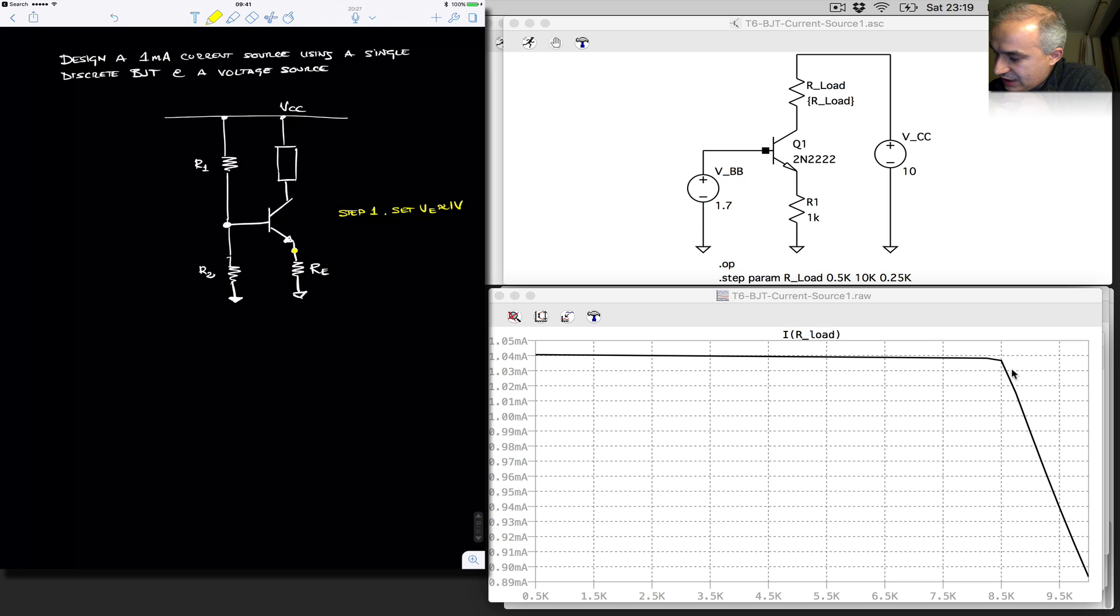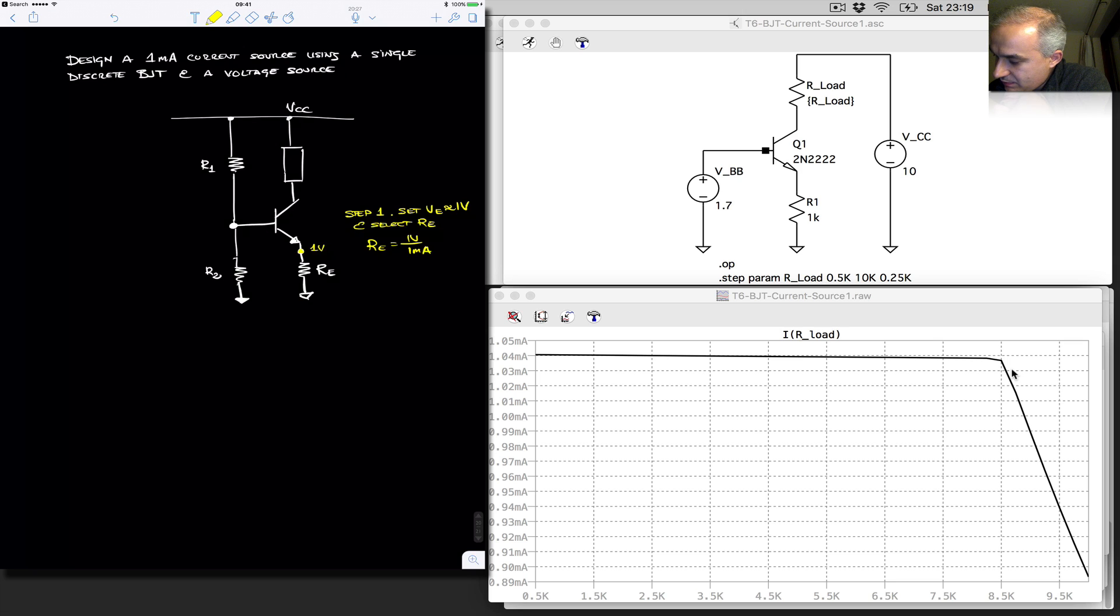So with that, we set the emitter at 1 volt, and select RE for the desired current. So in this case, if this is 1 volt, RE is going to be 1 volt over, we want a 1 milliamp, so we still get a 1 kilo ohm. This is our design here, this is 1K.